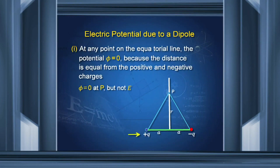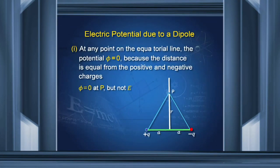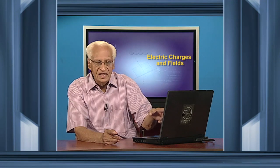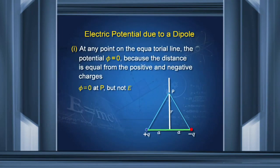This is a dipole: plus q and minus q. P is a point on the equatorial line at a distance r from the center of the dipole. We find the potential at P due to plus q, which is q divided by that distance, and due to minus q, which is minus q divided by that distance. Since these two distances are equal and the charges are opposite, the potential at P is equal to 0. However, the electric field at P, as found in the last lecture, is not equal to 0.